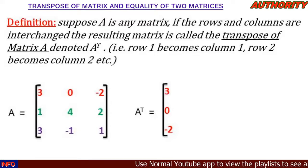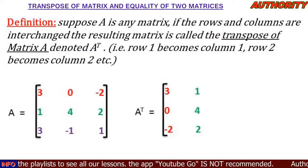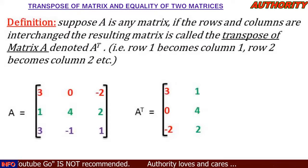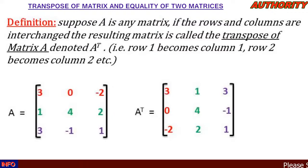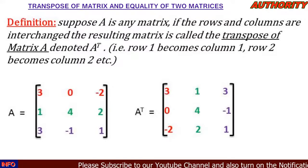The second row is 1, 4, 2 — it becomes our second column: 1, 4, 2. Then the third row is 3, -1, 1 — it becomes our third column: 3, -1, 1. This resulting matrix is called the transpose of matrix A, usually denoted A^T.